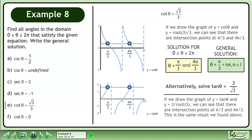Alternatively, if we draw the graph of y equals tan θ and y equals 3 over root 3, we can see that there are intersection points at π over 3 and 4π over 3. This is the same result we found above.